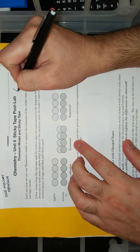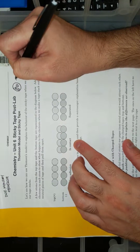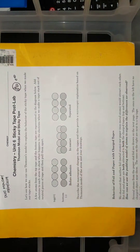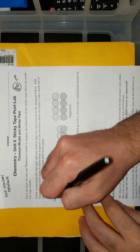Yesterday in class, we talked about Thomson's model to explain where these charges were coming from. And if you remember, our model of matter is now going to have electrons in them. Now we have electrons, and we want to apply this to our sticky tape lab.